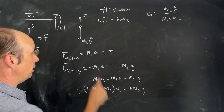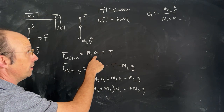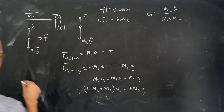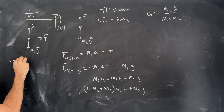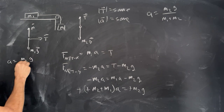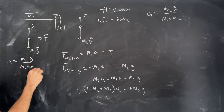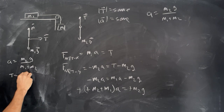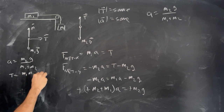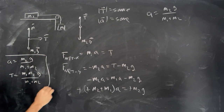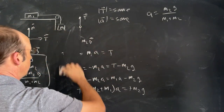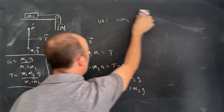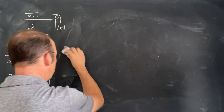The acceleration is a = M2·g / (M1 + M2), and then multiplying by M1 gives the tension T = M1·M2·g / (M1 + M2). Let's write those down and put a box around them so we don't lose them.